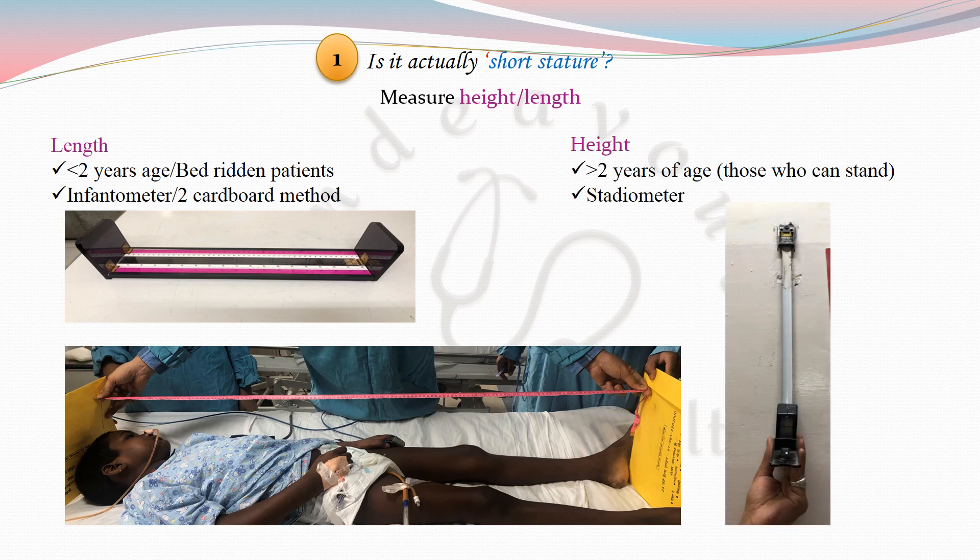Height is measured in children more than 2 years of age or those who can stand in a steady manner. This is a wall-mounted stadiometer where you pull down the tape to the vertex of the head of the child and the reading is recorded on the display above.